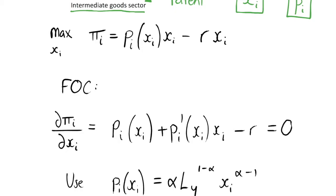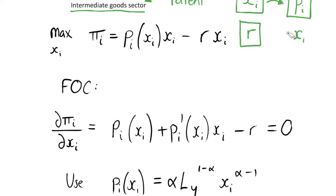These intermediate goods firms have a patent over each X_i which they can sell at P_i, but they still need to produce their intermediate goods. What they can do is rent a unit of capital at the rental rate R, which is the same for every firm in the industry. This rented capital allows them to produce X_i, which they can then sell on to the final goods sector. We will have some sort of profit in this model because these firms have patents giving them monopoly power.